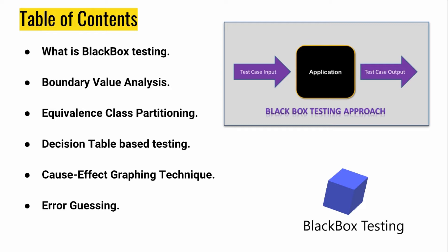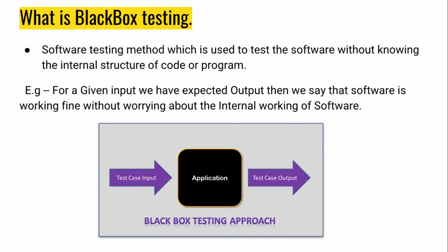The table of contents for this tutorial series includes: first, what is black box testing, and second, the different types of black box testing techniques you can use as a software tester. These techniques include boundary value analysis, equivalence partitioning, decision table-based testing, cause-effect, and error guessing. We have a separate tutorial for all of them. This tutorial covers only the first and second parts.